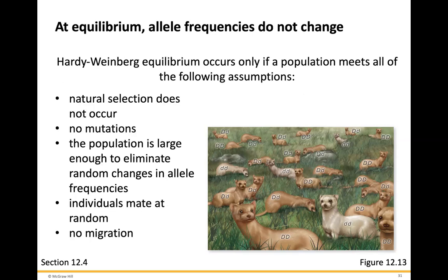At equilibrium, allele frequencies do not change. Hardy-Weinberg equilibrium occurs only if a population meets the following assumptions: natural selection does not occur, there are no mutations, the population is large enough to eliminate random changes in allele frequencies, individuals mate at random, and no migration. Essentially, at equilibrium you'll see no changes in allele frequencies — in a closed vacuum. But nature is not a closed vacuum.